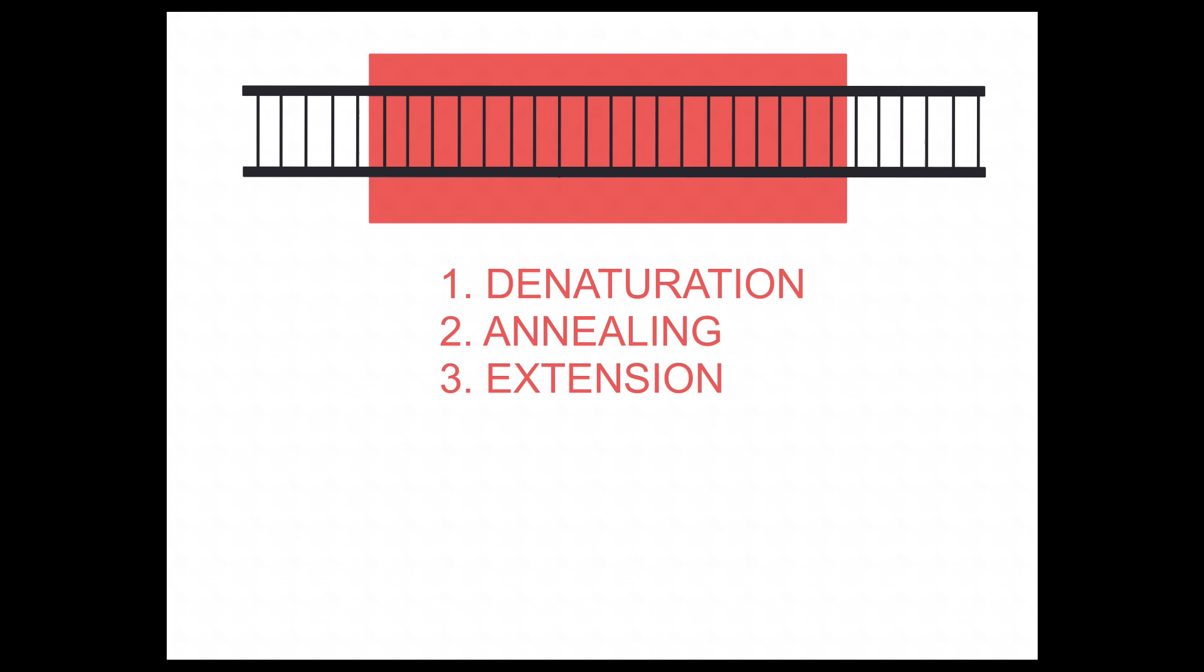The target region is indicated here by the red box, and essentially what we want to do is make lots of copies of just this target region. That's what PCR can do via the use and implementation of three stages. These three stages are known as denaturation, annealing, and extension.